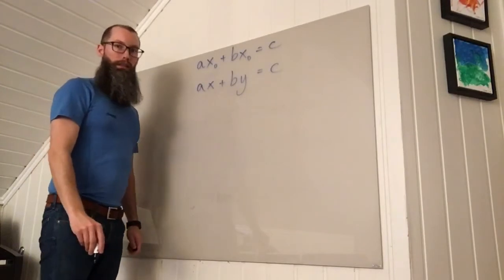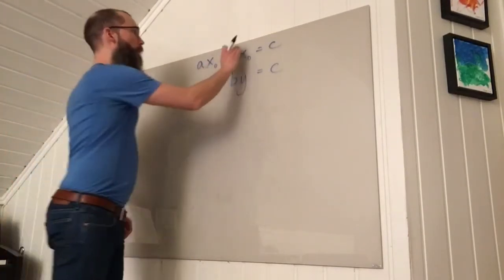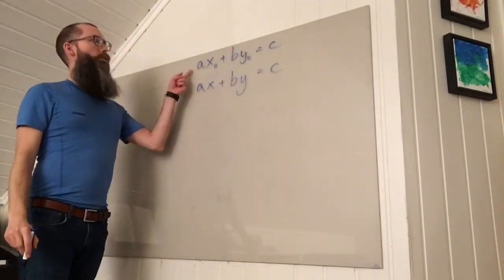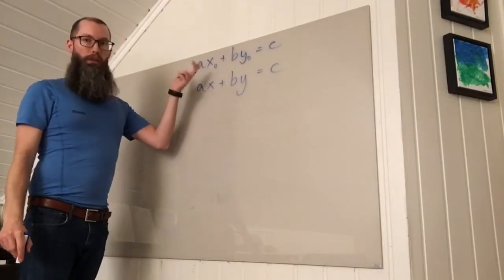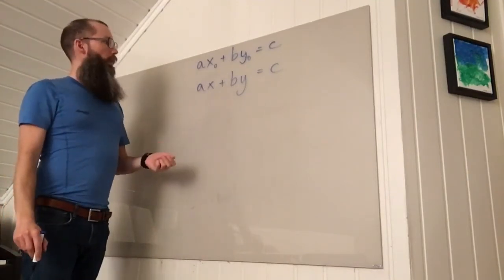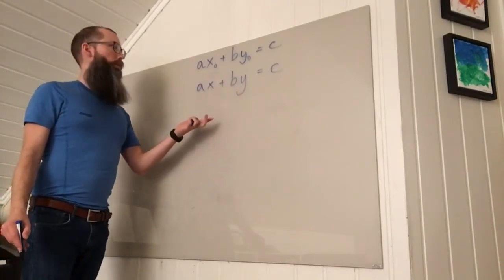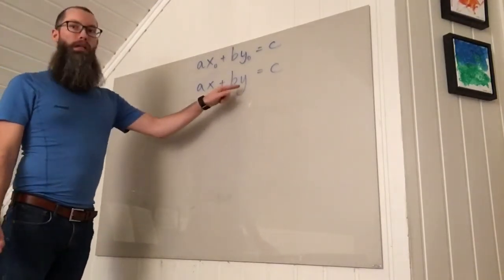Now to answer the second question, suppose X0, Y0 is a particular solution to our original equation. It can be found by the technique I just showed you. Let X, Y be any other solution to the equation. And let's see what is required of X and Y.